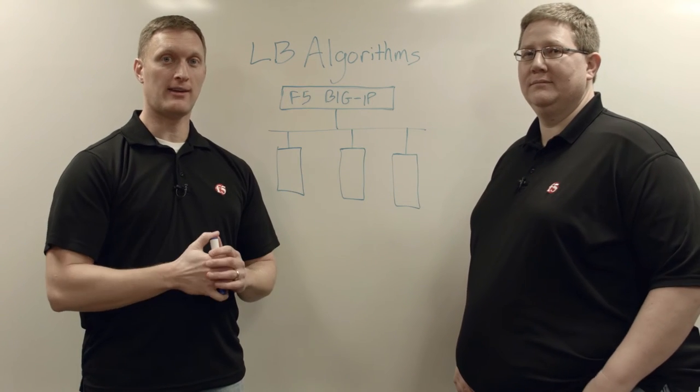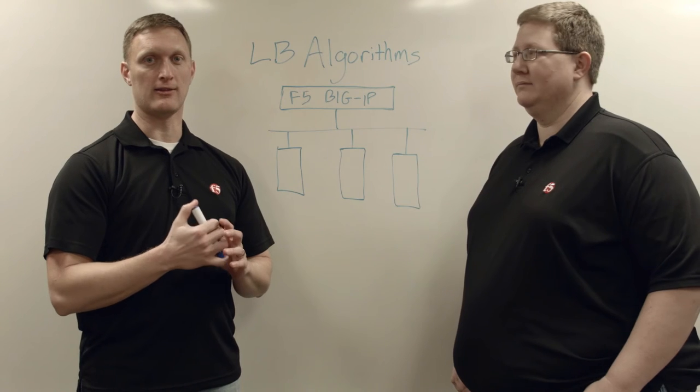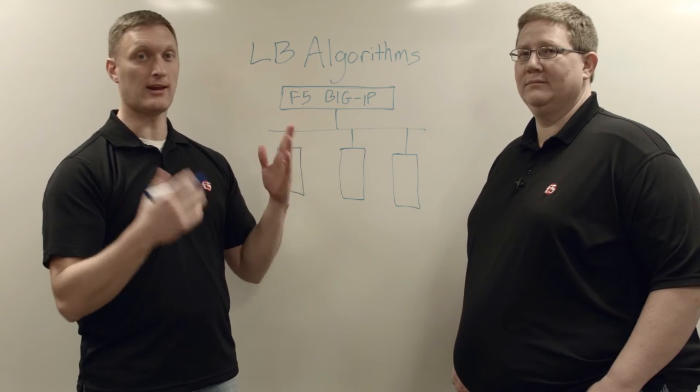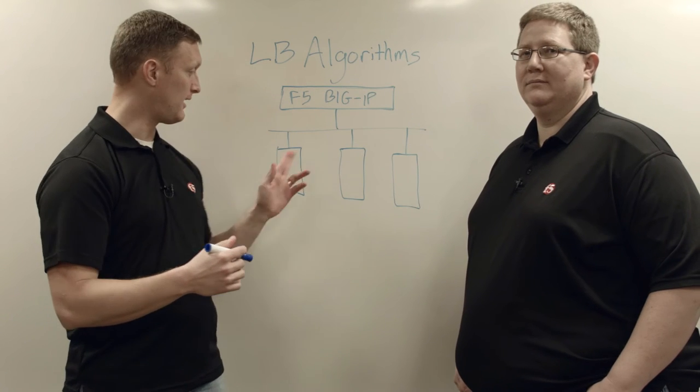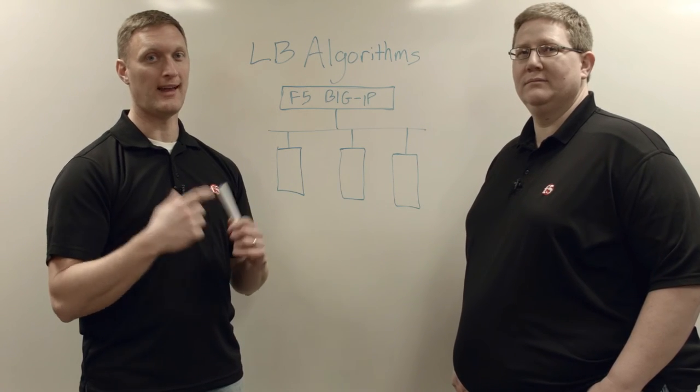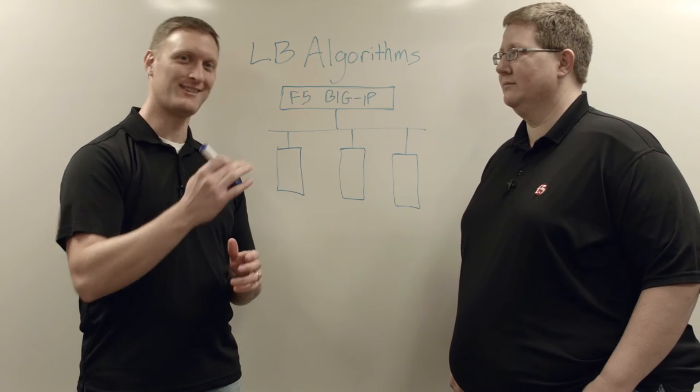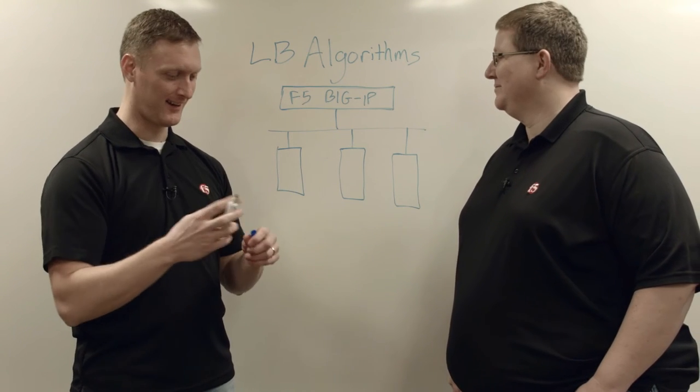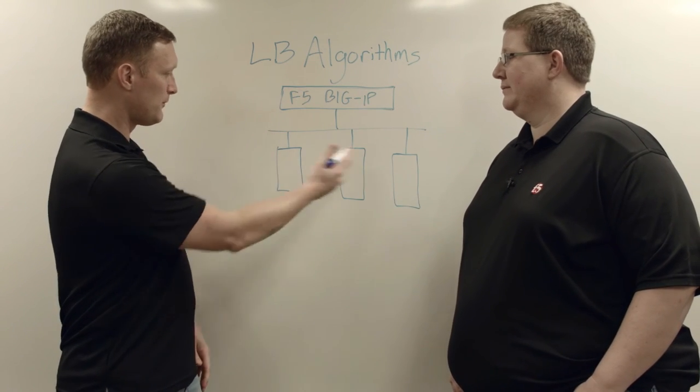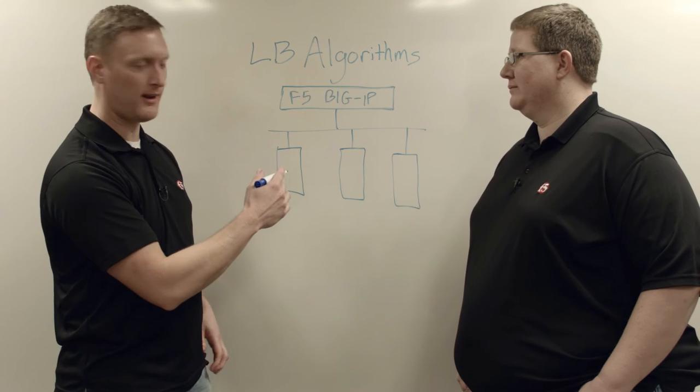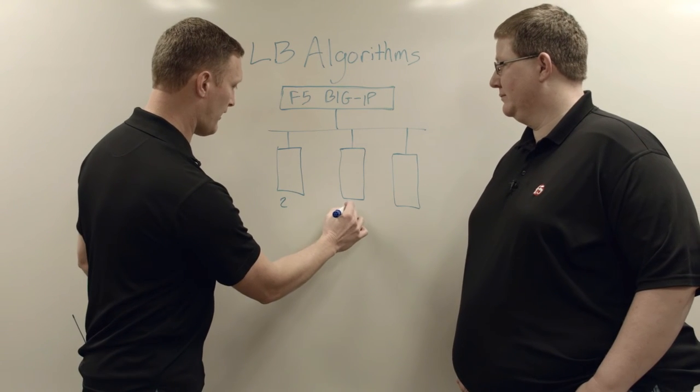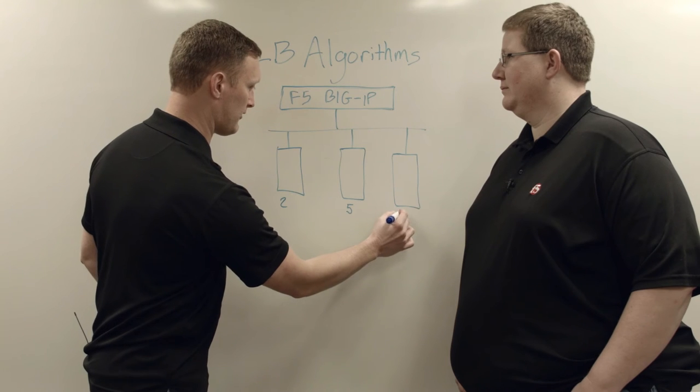Okay. So the last load balancing algorithm we're going to talk about today is called least connections. And what this does is the BigIP keeps a connection table and it knows how many connections each backend server has at that time. And whichever one has the least connections, that's who gets the next connection. So the name kind of describes what it does.